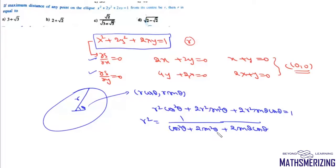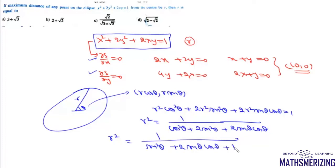From here we can write r² = 1 / (cos²θ + 2sin²θ + 2sinθ cosθ). Since cos²θ + sin²θ = 1, this simplifies to r² = 1 / (sin²θ + 2sinθ cosθ + 1). This distance r is a function of θ, and we need to maximize it. We can use either trigonometry or calculus — differentiating r with respect to θ and setting it equal to 0 gives the value of θ for which r is maximum.